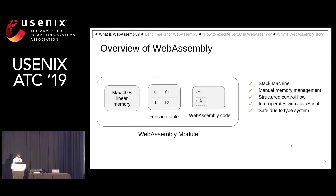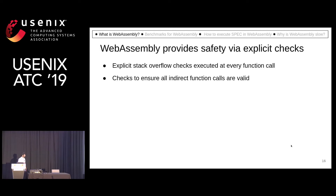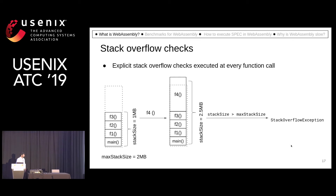WebAssembly is safe due to its type system and two explicit checks that it provides. The first is a stack overflow check. At every function call, it will check whether the function call stack that has been allocated grows beyond the bound of the maximum stack size.